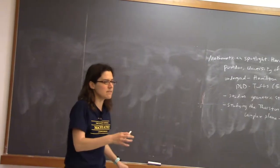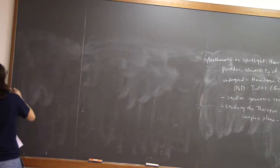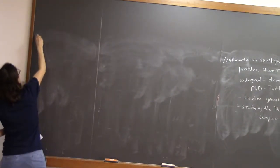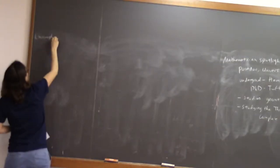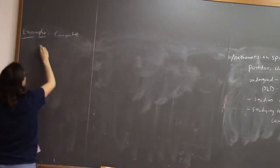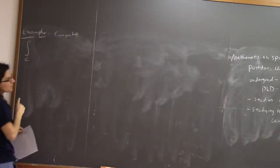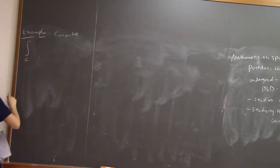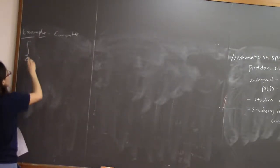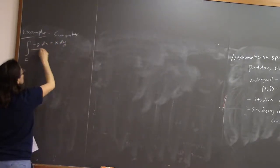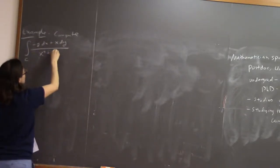So I thought we'd start with an example of where Green's theorem can go wrong if you're not careful — Green's theorem danger zone. Compute the vector line integral over the curve C, which is the unit circle oriented counterclockwise, of negative y dx plus x dy over x squared plus y squared.